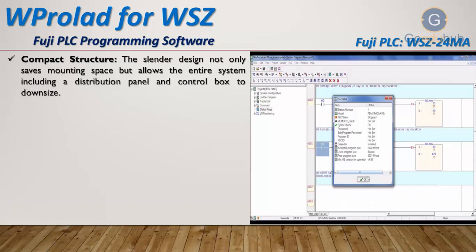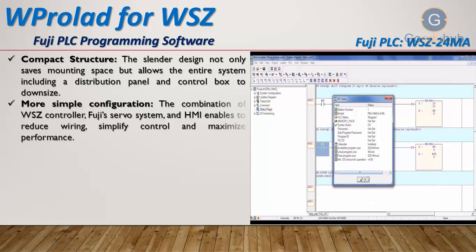The WSZ PLC has a compact structure. Its cylinder design not only saves mounting space but allows the entire system — including the distribution panel and control box — to downsize. This compact structure will reduce the panel size.